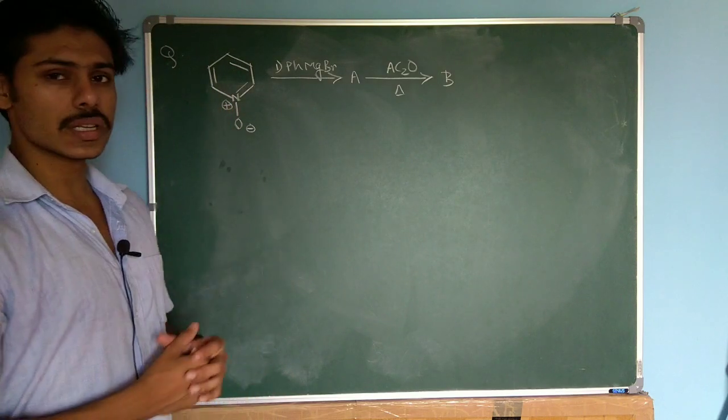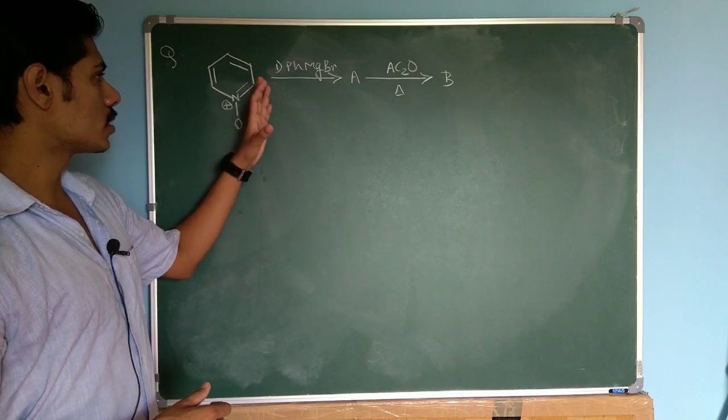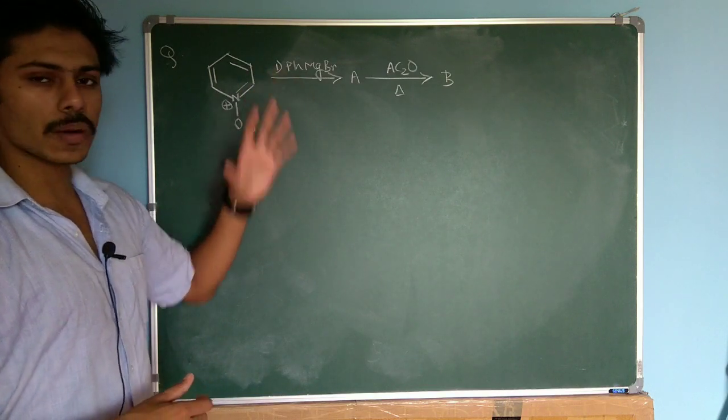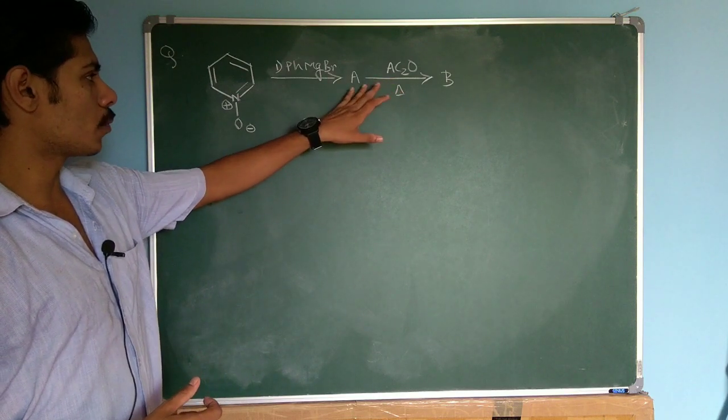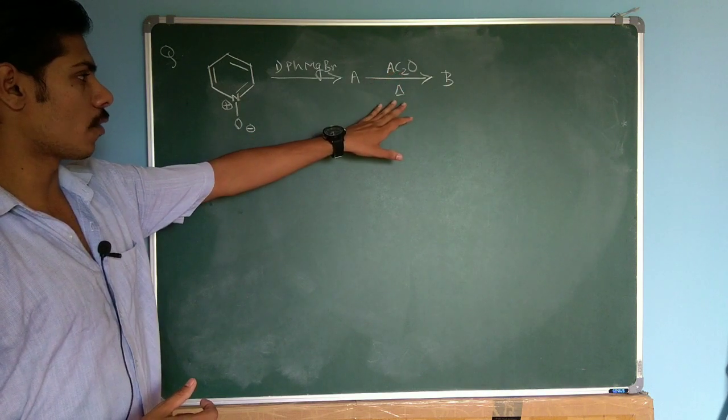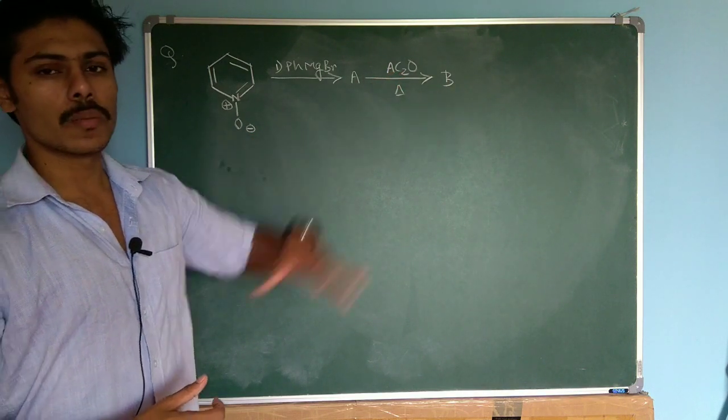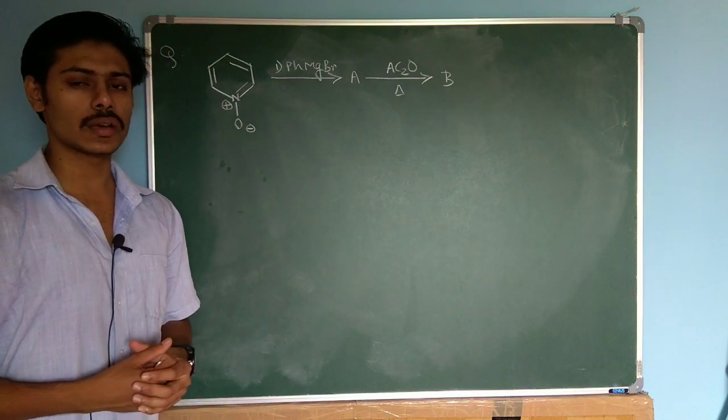So you can see this is the question given. This is a pyridine N-oxide, and in the first step it is reacted with phenyl magnesium bromide, a Grignard reagent, which will give product A. Then product A on treatment with acetic anhydride followed by heating will give product B. So you have to predict what is product A and product B.